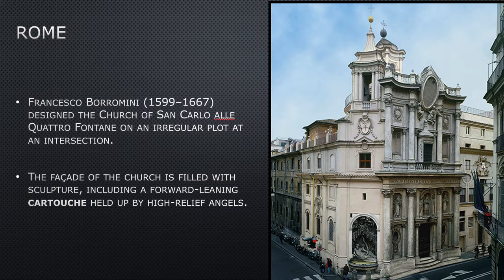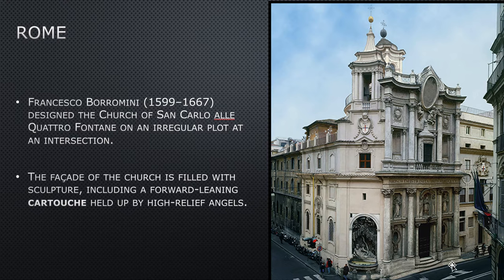We're only going to really look at one of his structures, and that's this one. This is San Carlo alla Quattro Fontane. It was this little church built on an intersection of two streets — on each corner of this intersection there was a fountain. So that's the four fountains of the Quattro Fontane. The church is dedicated to San Carlo, or San Charles. If you just look at this now and compare it to some of the other churches we've seen — Gothic cathedrals, San Lorenzo in Florence — this is way different.